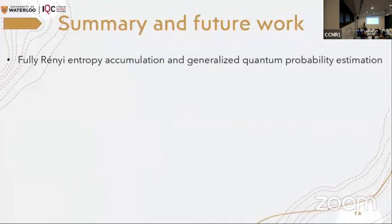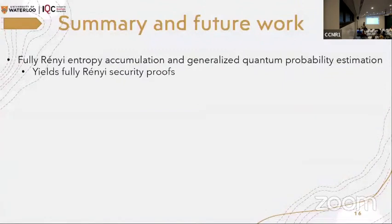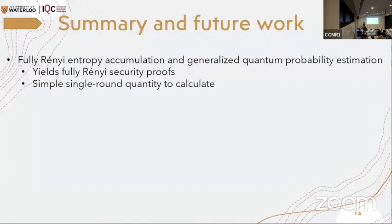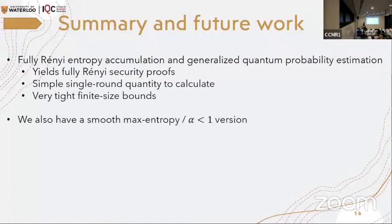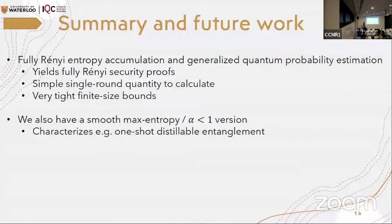Now to summarize, so we introduced full Rényi entropy accumulation and generalized probability estimation. This yields fully Rényi security proofs. And the power of what we got is that one of the power of the things that we got is a simple single round quantity to calculate. It is also extremely gives us extremely tight finite bound results. And I did not point this out, but we also have a smooth max version of it for alpha less than one version. This is also useful for the case for one shot distillable entanglement, if you're interested.